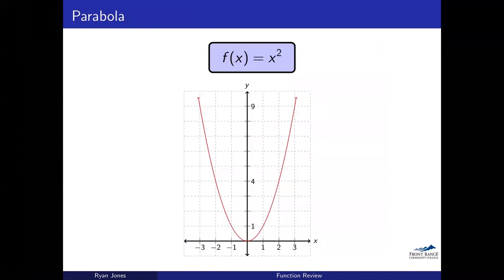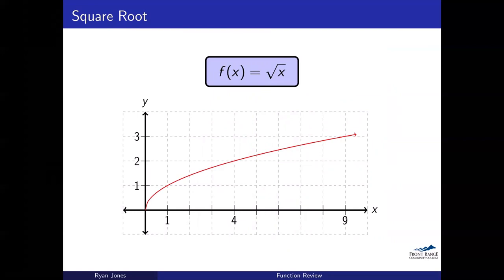Let's quickly look at the graphs. We know lines, so skip that. The standard parabola x squared has points (1,1), (2,4), (3,9) — we should be comfortable with that. The square root function is like x squared flipped on its side, with points (1,1), (4,2), (9,3). Note there's no plus or minus in front, so the function doesn't go below the x-axis.